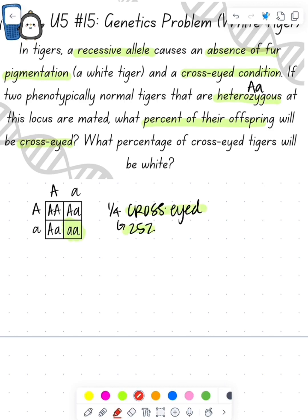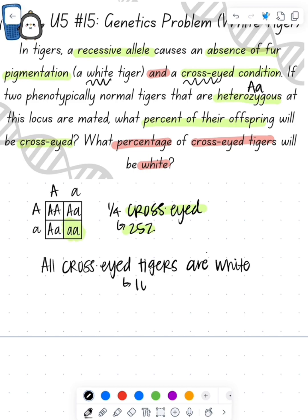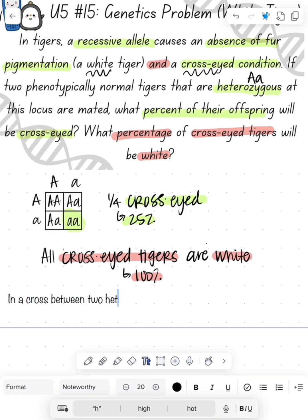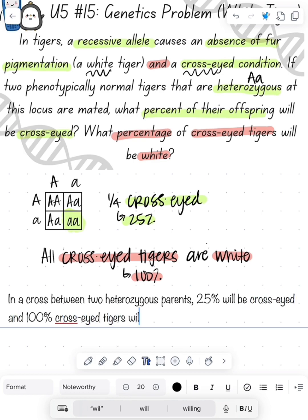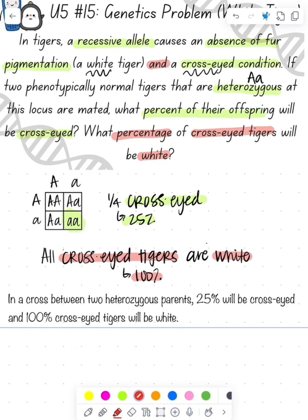Then the question asks: what percentage of the cross-eyed tigers are going to be white? The problem told us that the same allele causes both the white tiger coloration and the cross-eyed condition. So all cross-eyed tigers are going to be white — that would be 100%. In this cross between two heterozygous parents, 25% are cross-eyed, and 100% of those cross-eyed tigers will be white.